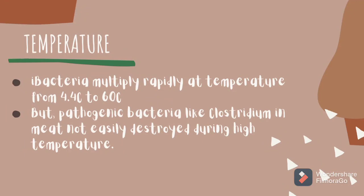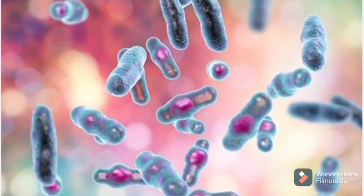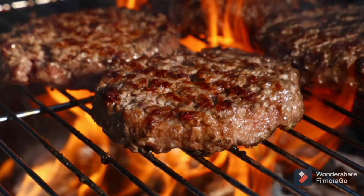The spores of some pathogenic bacteria such as Clostridium are not easily destroyed during high-temperature cooking. The heat of cooking can actually activate those spores to germinate and develop into mature bacteria.